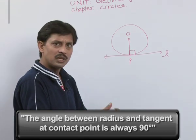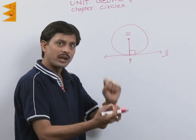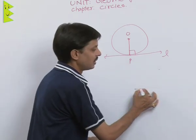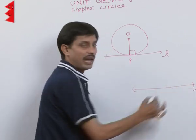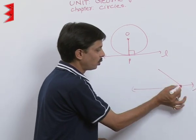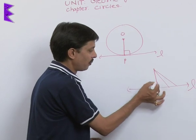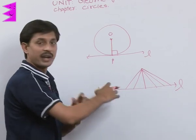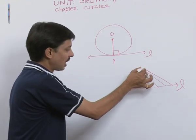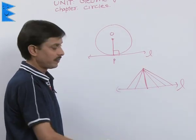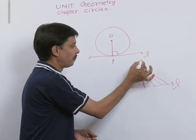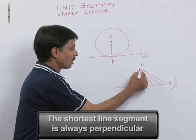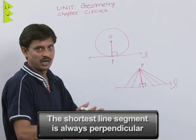In order to prove this result, let me explain: if this is a point in the exterior and this is the line, we can join from this point to this line at infinite points. But one of the line segments will be the shortest. The shortest line segment is always perpendicular.